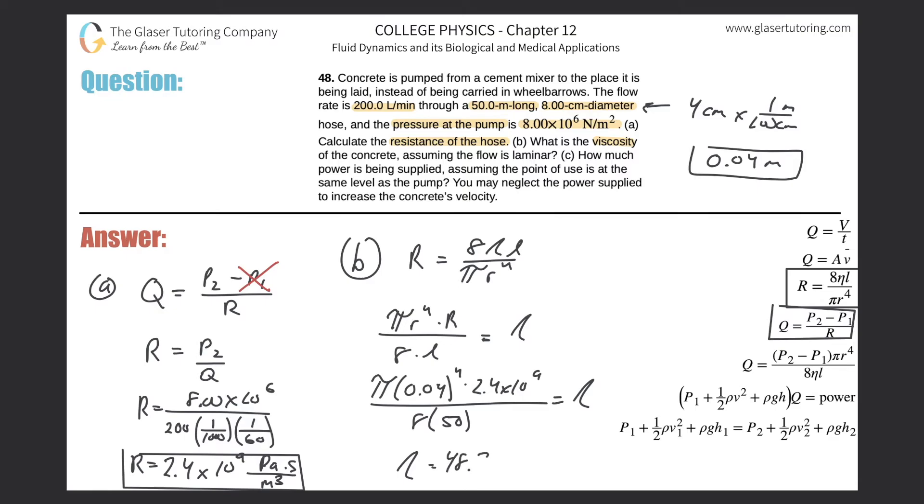You'll get a value of about, if we do three sig figs, 48.3. That is a pretty large viscosity there, but that's what it is. And the units there are pascal-second.